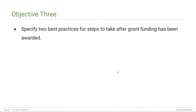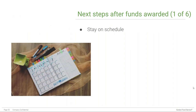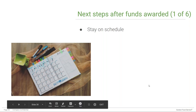Moving to objective three — best practices for steps to take after grant funding has been awarded. First, stay on schedule as much as possible to accomplish the activities identified in your project's timeline. Most funding sources require some type of progress report, so know whether your funding source does, identify when those reports are due, and accomplish your activities — whether data collection, manuscript writing, or other work — so you can report appropriate progress.